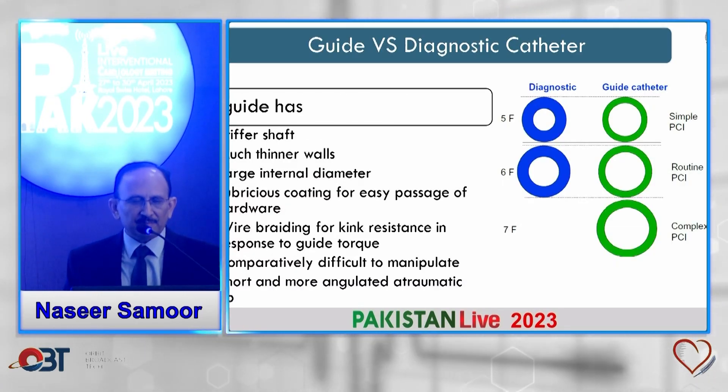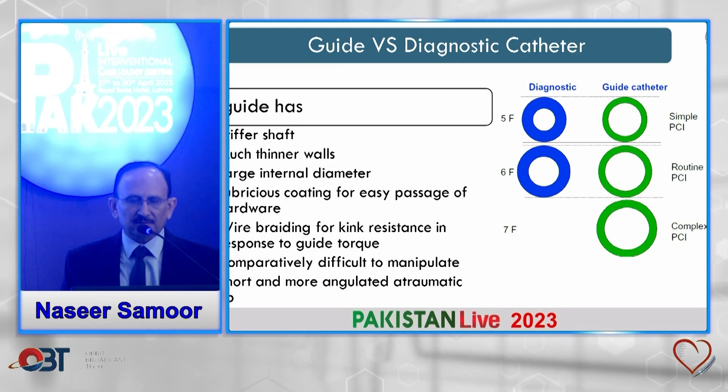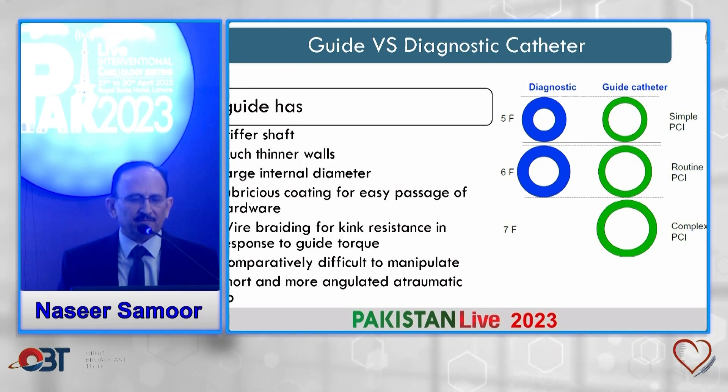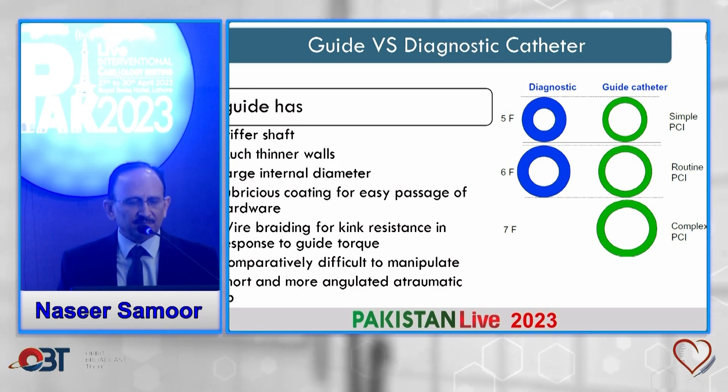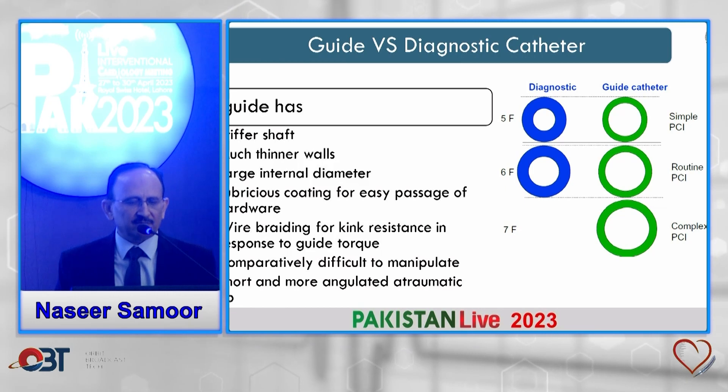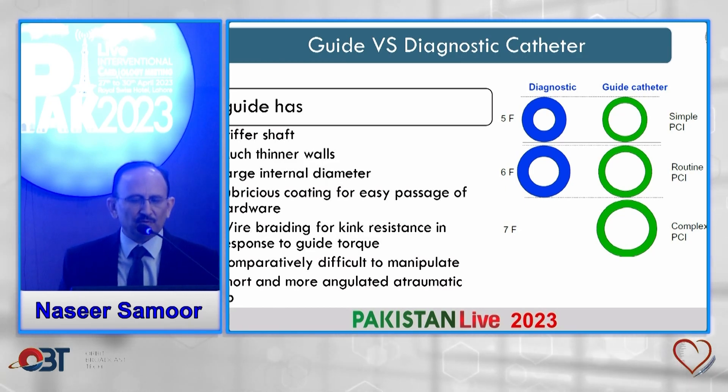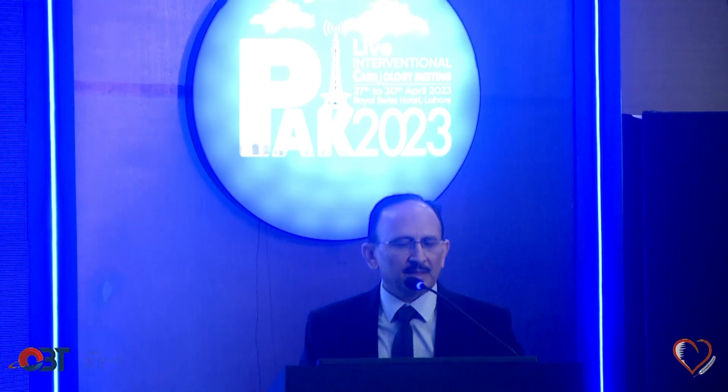Compared to diagnostic catheters, guide catheters have a stiffer shaft, much thinner walls, a large internal diameter, and a lubricious coating for easy passage of hardware. The wire braiding makes them more kink-resistant. However, they are comparatively more difficult to manipulate and have a short angulated tip for atraumatic engagement.